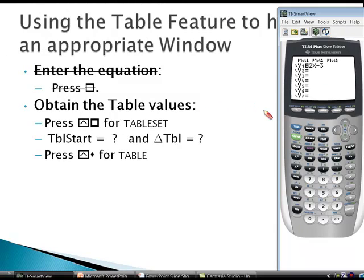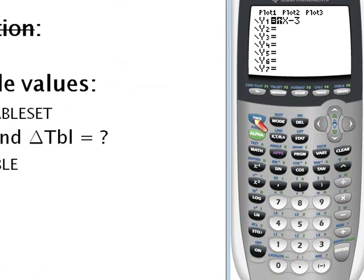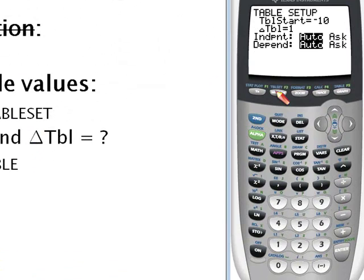Next we want to obtain table values. So if I press second table set—right, the table set's right above the window. You see here in purple it says TBLSET. Now my table starting at negative 10 which is what I want. Let's say I had a different number here like 9. Some of your calculators might have 7 or 17. Well what we want to do is tell the table where to start. So in this case we're going to use the negative key, not the subtraction key but negative.